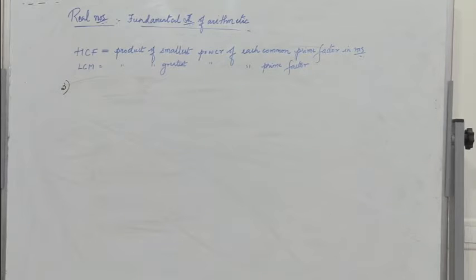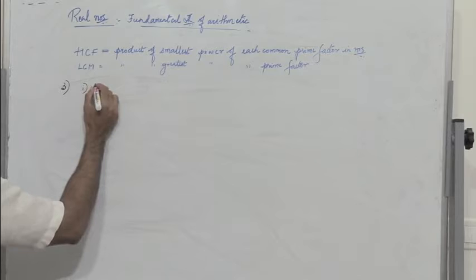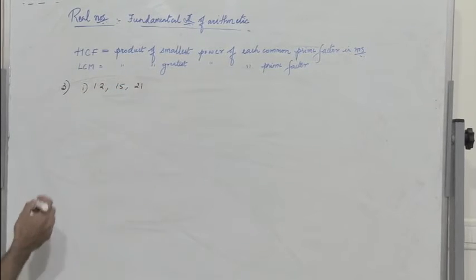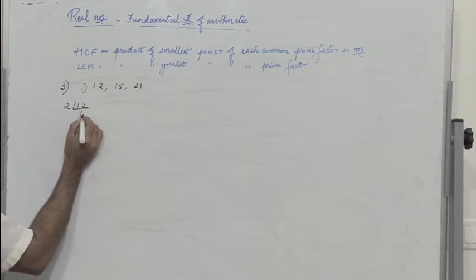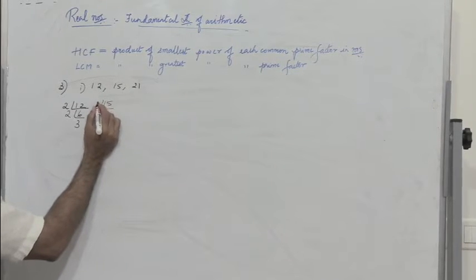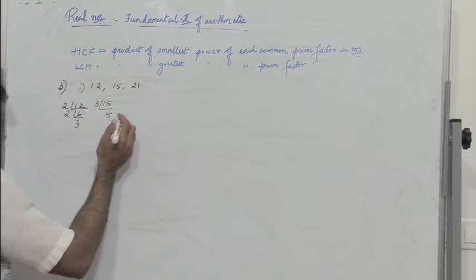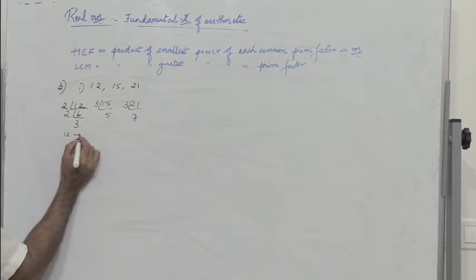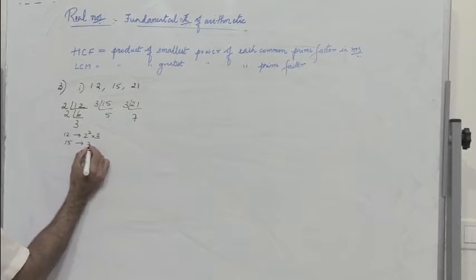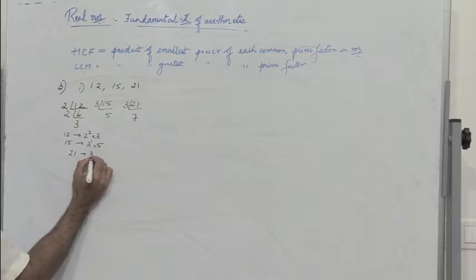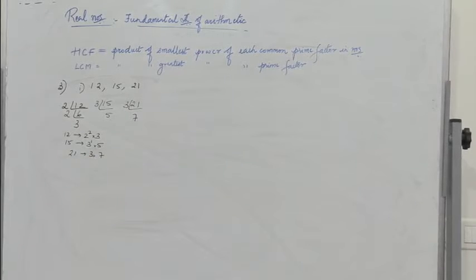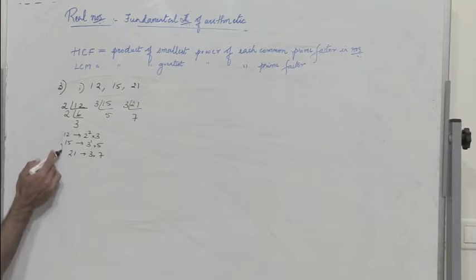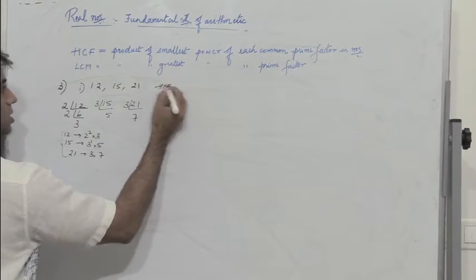Problem 3: find HCF and LCM of 12, 15, and 21 by applying prime factorization. Dividing 12 by 2 gives 6, by 2 again gives 3. Dividing 15 by 3 gives 5. Dividing 21 by 3 gives 7. So 12 = 2² × 3, 15 = 3¹ × 5, and 21 = 3 × 7. For HCF, the number common to all three is 3, and the smallest power is 3¹. So HCF = 3.